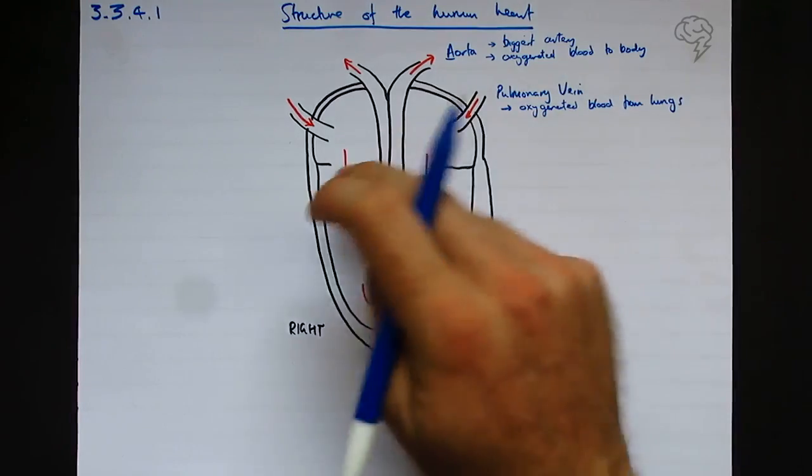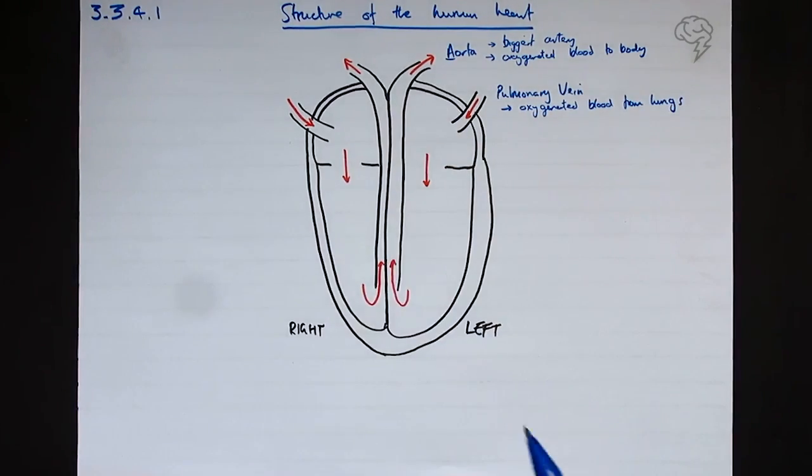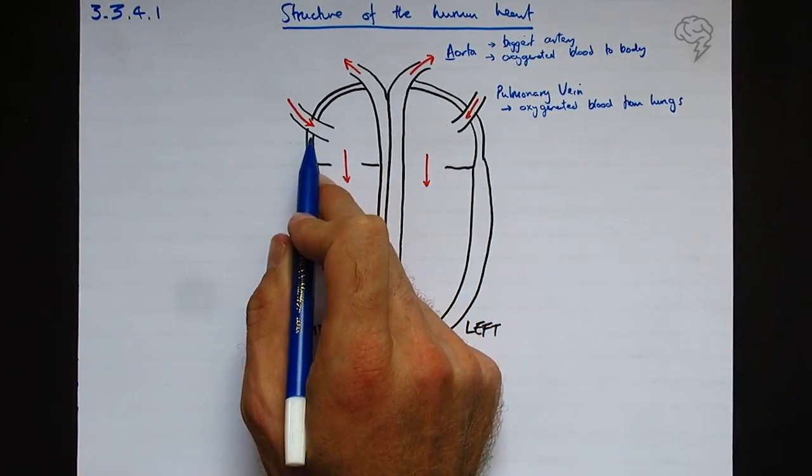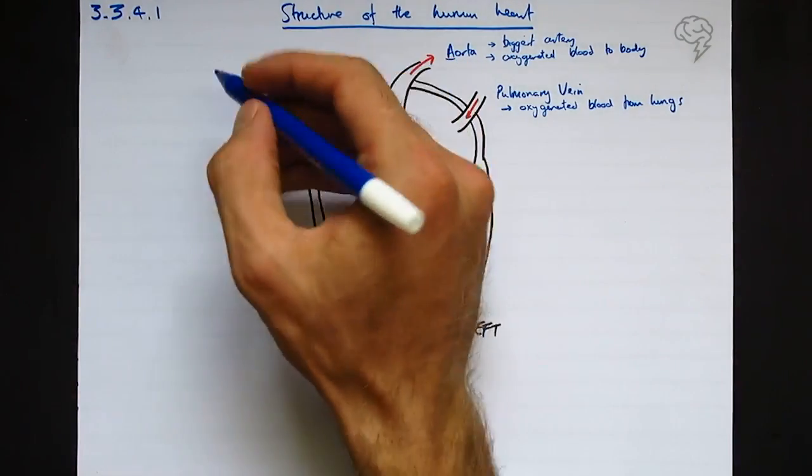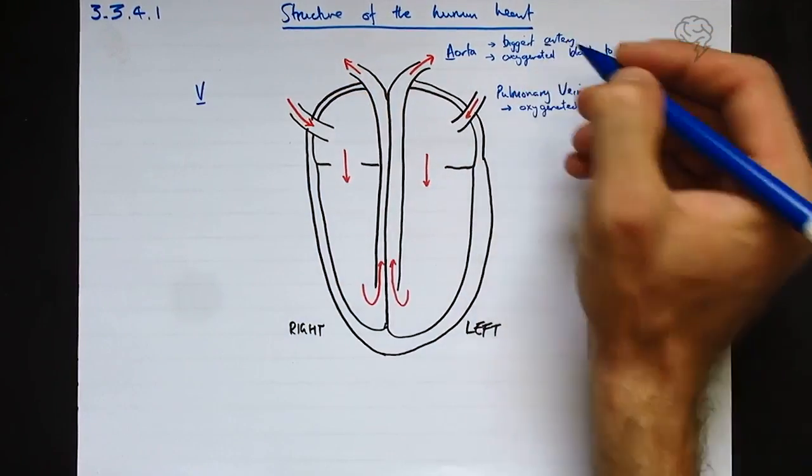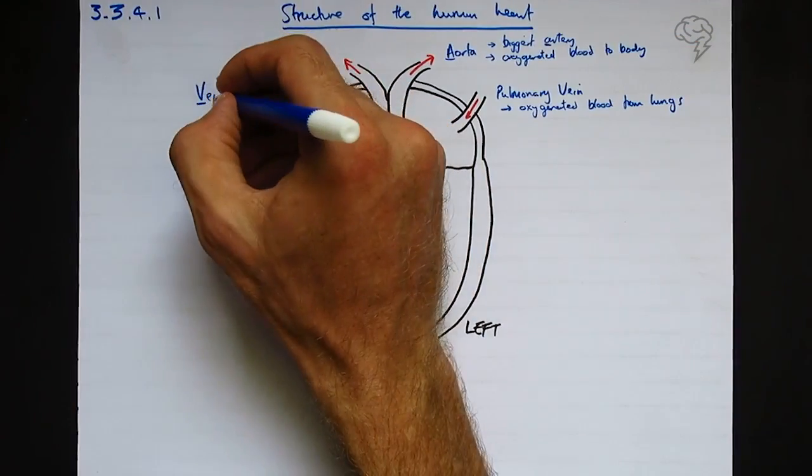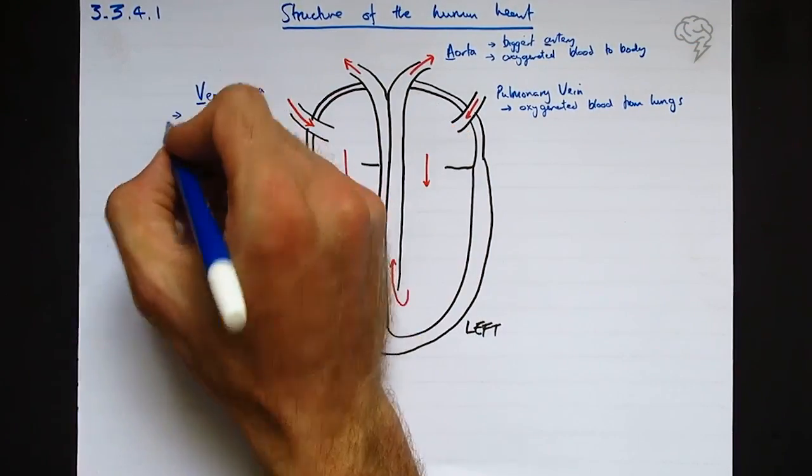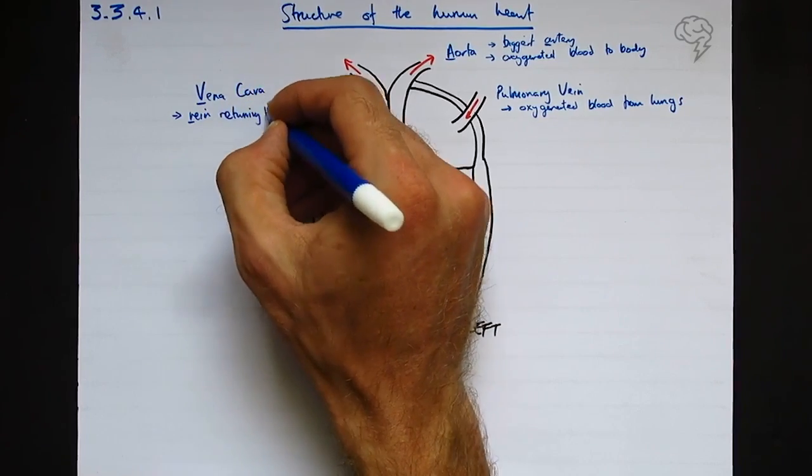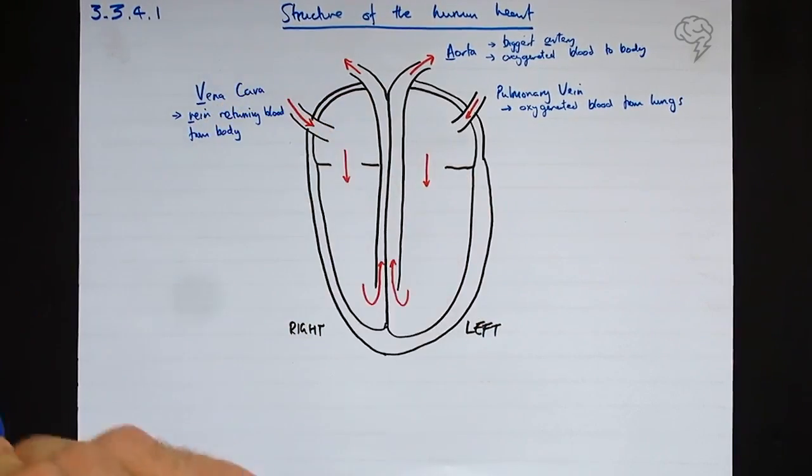I'm going to fill in the little gaps here in a moment, but before that I'm going to finish all these. So this is a vein coming back towards the heart, but it's not called a vein - doesn't have vein in its name, but it does begin with V. In fact, I'm going to underline my A there. So this is the vena cava. The vena cava is the vein returning from the body.